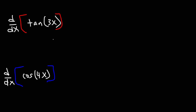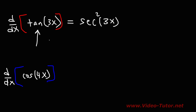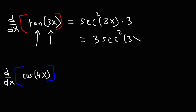So let's start with the first one. First we need to find the derivative of tangent. The derivative of tangent is secant squared, and the angle is going to be the same — whatever you see inside needs to go in there. Next, we find the derivative of the inside function 3x. The derivative of 3x is 3, so the answer is 3 secant squared 3x.